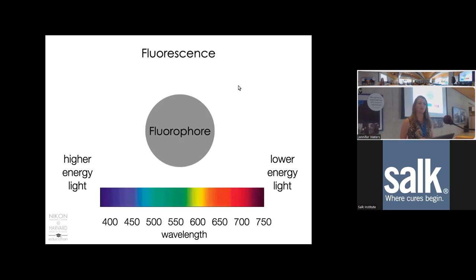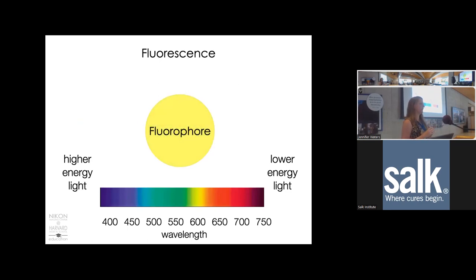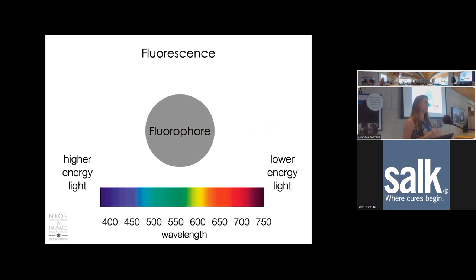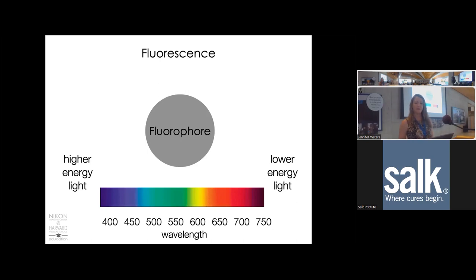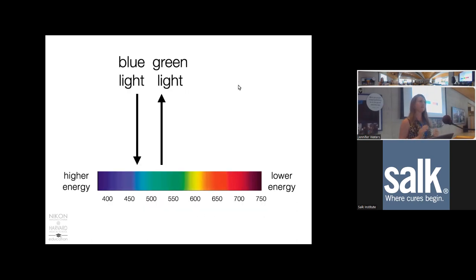In the fluorescence reaction, a fluorophore absorbs a photon of light and enters an excited state, then emits another photon of longer wavelength—so lower energy. In this case we showed blue light being absorbed and green light being emitted. But there are fluorophores that absorb and emit all different wavelengths of light. What is consistent is that the photon emitted is of lower energy than the photon absorbed.